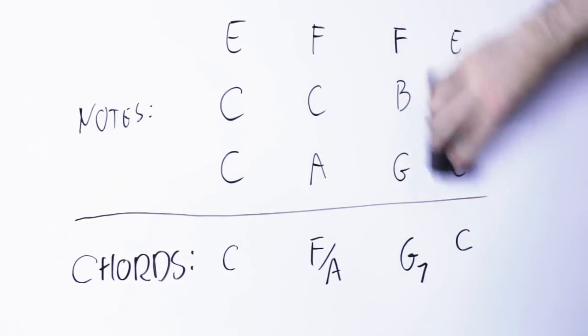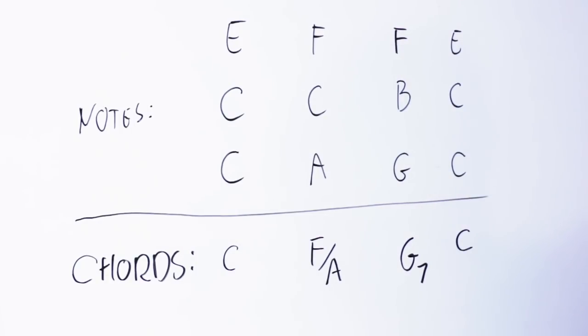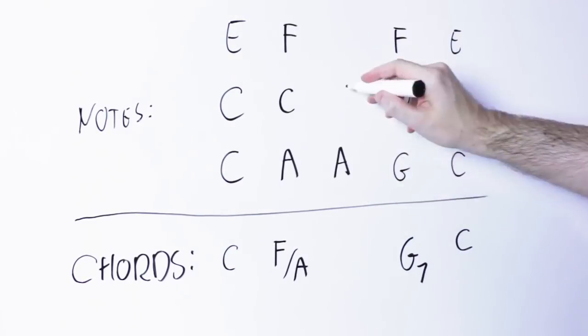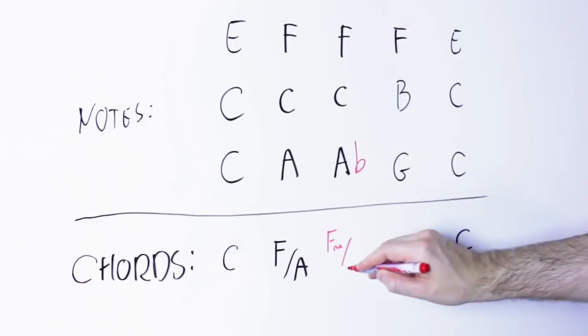Anyway, how can we make this chord progression more interesting? Well, we can start altering some notes of this F over A. One very typical and good sounding alteration is to make this F chord minor by lowering the A note to an A flat.